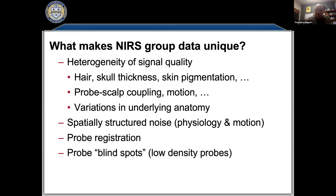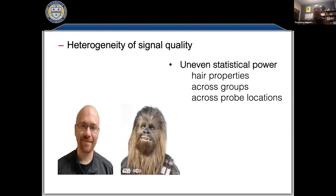The first issue is a really strong heterogeneity of the signal. You get very different signal-to-noise whether you're scanning yourself or someone like Chewbacca — hair is different, skin pigmentation affects signal, skull thickness affects it. There's a lot of heterogeneity that we don't have in something like MRI. In MRI, it doesn't matter what hair color someone has — you get the same signal-to-noise pretty much everywhere. In fNIRS we don't.